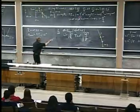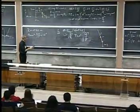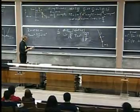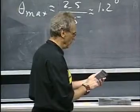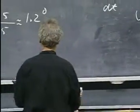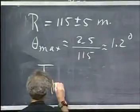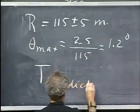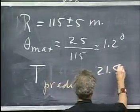I take two pi times the square root of r over g, and r is 115. I divide it by g. I take the square root. I multiply by two. I multiply by pi. And I get T prediction equals 21.5.